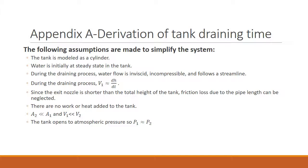Appendix A: Derivation of tank draining time. The following assumptions are made to simplify the system. The tank is modeled as a cylinder. The water is initially at a steady state in the tank. However, during the draining process, water flow is inviscid, incompressible, and follows a streamline. The water draining at this time will also have a velocity that is approximately dH/dt, which is the change in height over the change in time.